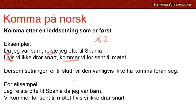If the subordinate clause is at the end, you generally don't use a comma in front of it. I'll show some exceptions at the end of the video, but generally if you reverse the phrase order: 'Jeg reiste ofte til Spania da jeg var barn' — no comma, because the subordinate clause is at the end. Likewise, 'Vi kommer for sent til møtet visst at de ville dra snart' — subordinate clause at the end, so no comma.